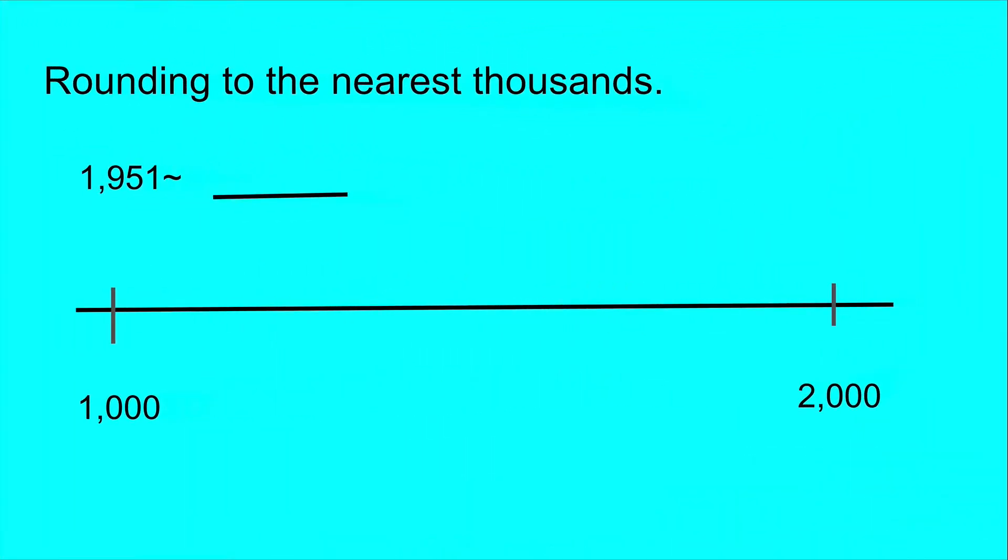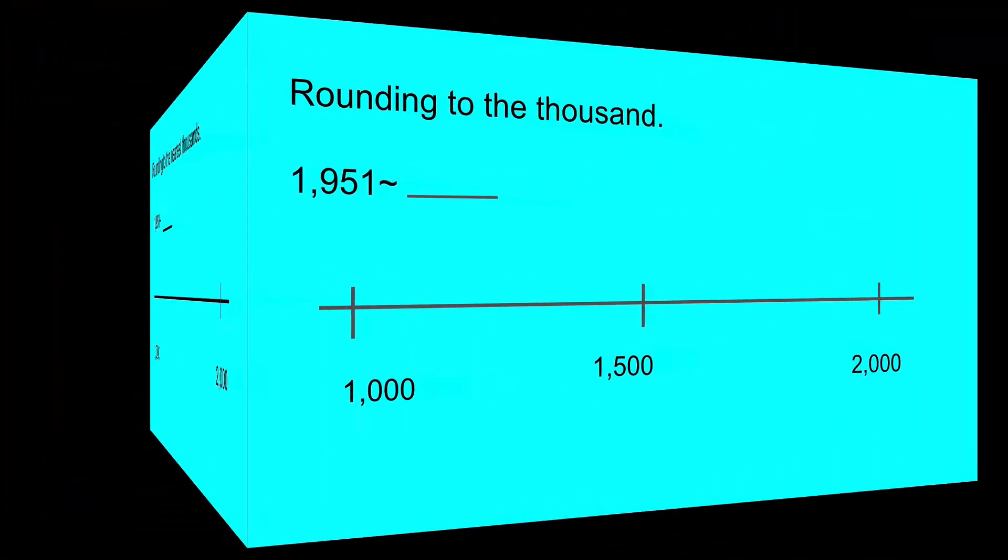1,951 is after 1,000 but before 2,000. Great, next you write the midpoint. The midpoint is 1,500.